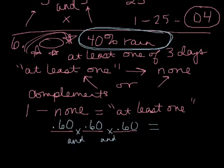Alright, so that equals 0.216. You want the complement, 0.216. That's the probability, remember, of no rain on day one, no rain day two, no rain day three. So that's no rain, none.